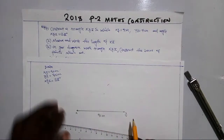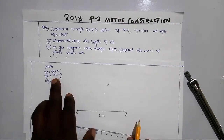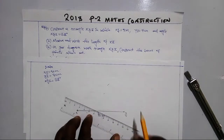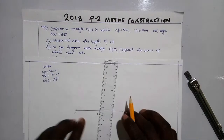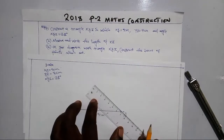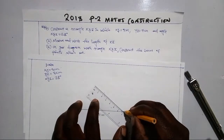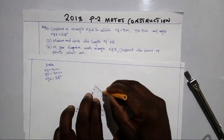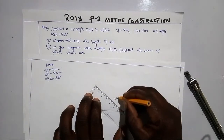Now that you have found the angle, measure YZ which is 7 centimeters. Measure passing through the point you marked with the protractor for the 80-degree angle. Measure 7 centimeters from Y in that direction. This is our 7 centimeters for YZ.